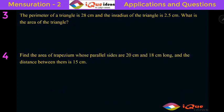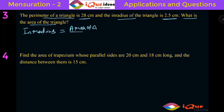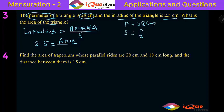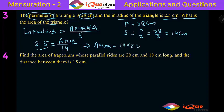Now let's go to the next one. This question says the perimeter of a triangle is 28 centimeter and the inradius of the triangle is 2.5 centimeter. What is the area of the triangle? Now for any triangle, the inradius formula is equal to area of triangle divided by semi-perimeter. The inradius is 2.5, and the semi-perimeter is 28 by 2, that is 14 centimeters. So 2.5 equals area divided by 14, giving us area equal to 14 into 2.5, which is 35 centimeter square.